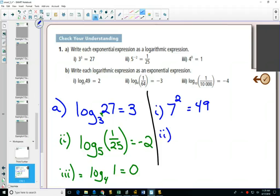Part 2, the base is 4, the exponent is negative 3, it's equal to 1 over 64.